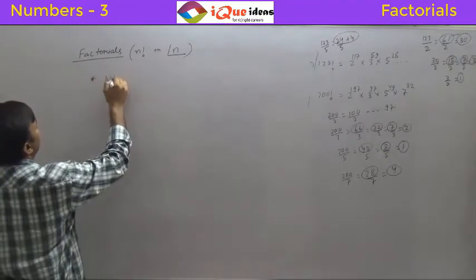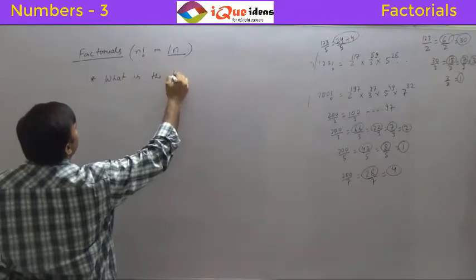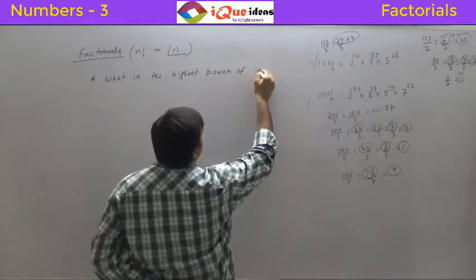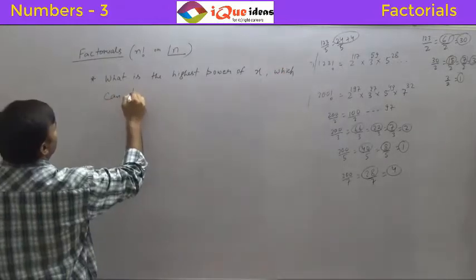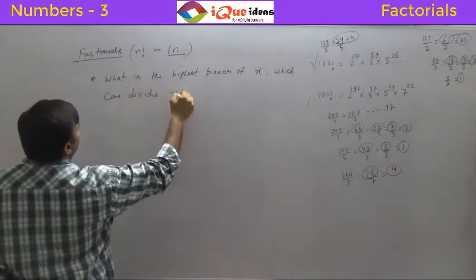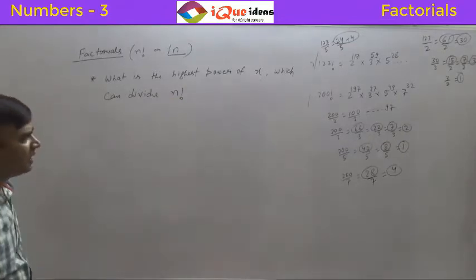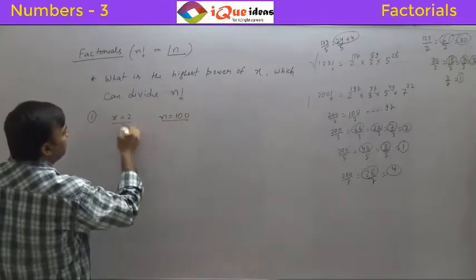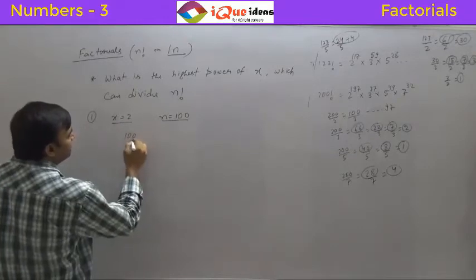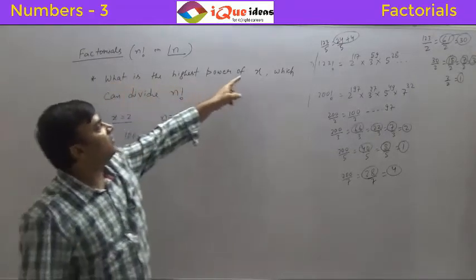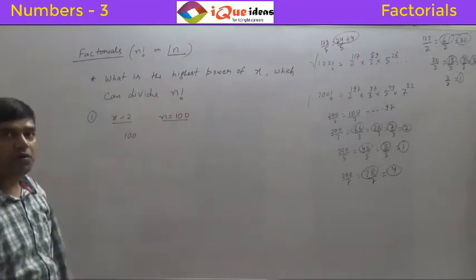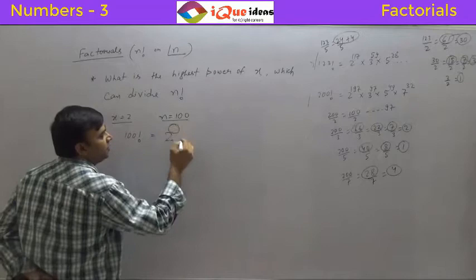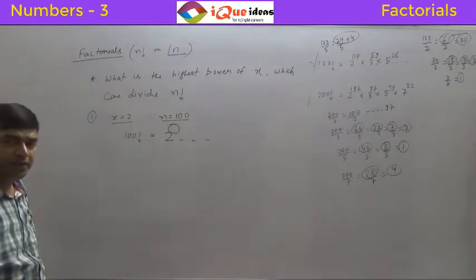The question is: what is the highest power of x which can divide n factorial? Let's take x equal to 2 and n equal to 100. So what is the highest power of 2 which can divide 100 factorial? That's what we want to find — when we factorize 100 factorial, what will be the power of 2?